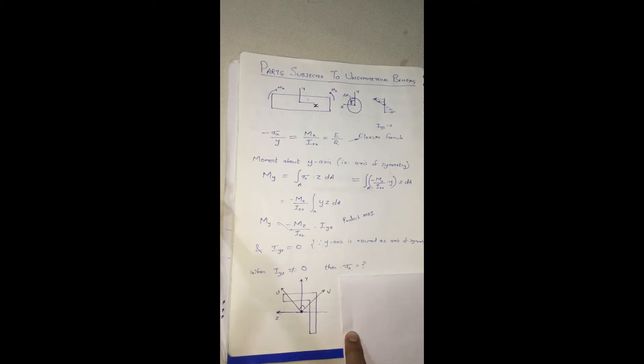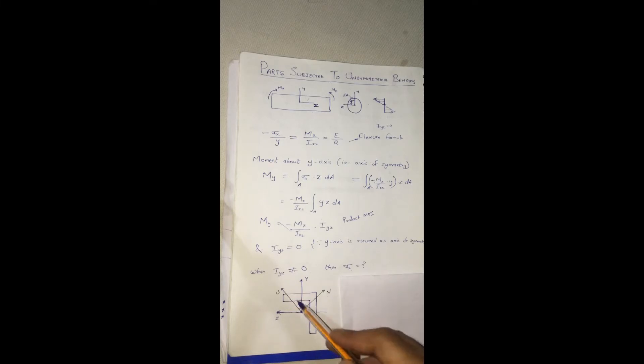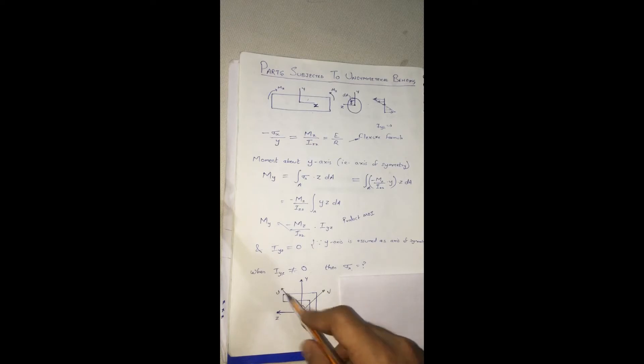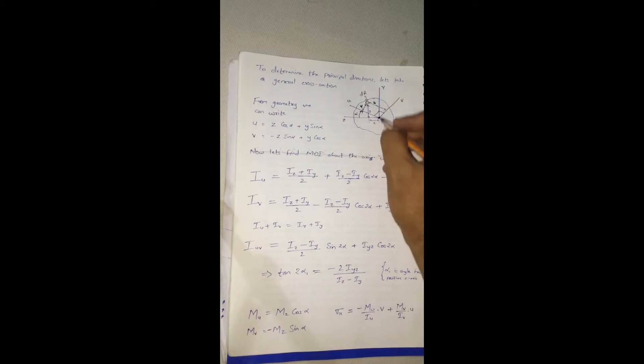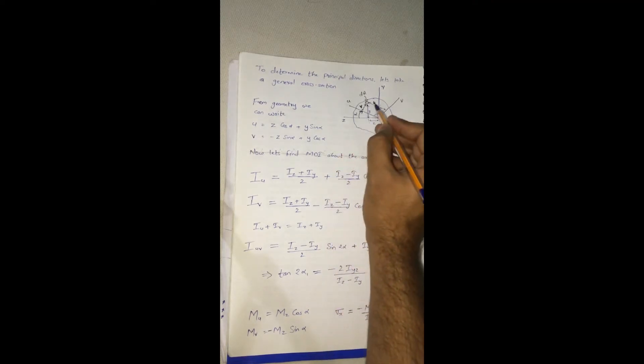To answer this question, we devised a method: if we find another axis about which the principal moment of inertia would be zero, then we can apply the flexural formula. We tried to find the direction of this UV axis, which we called the principal axis — because the product moment of inertia about this UV axis would be equal to zero. We took a general cross section with centroid, y-axis, and z-axis, and stated that the UV axis system is inclined at an angle alpha from the positive z-axis.